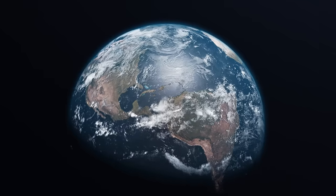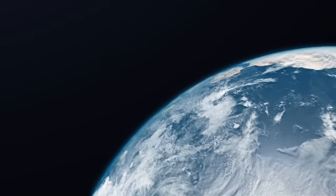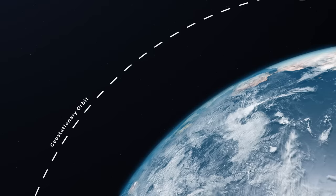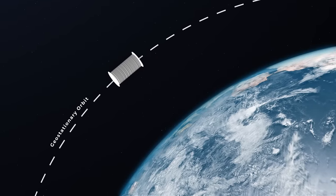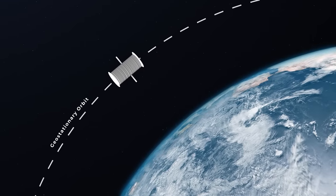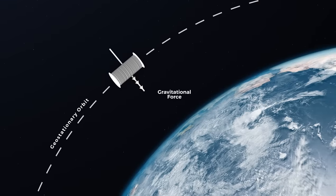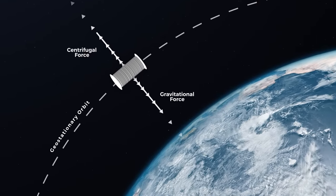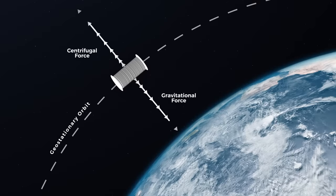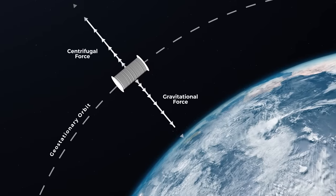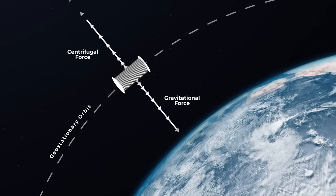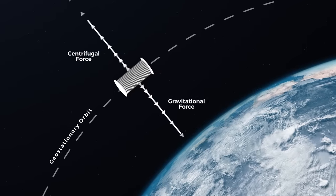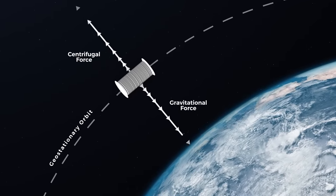Now something interesting happens when we start to extend our tethers out. Since this is our neutral point where gravitational force and centripetal force equal, any material extending towards Earth will experience more gravitational force, while any material extending away from Earth will experience more centrifugal force. This creates tension in our tether, which will reach its maximum at our neutral point at geostationary orbit, as everything below it is pulling towards the Earth, and everything above it is pulling outwards towards space.